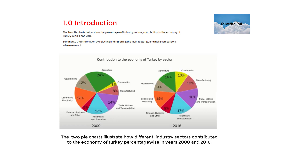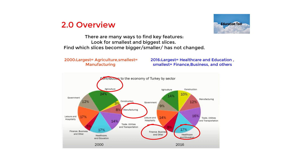You have already summarized the information in a general overview. In the introduction, I have paraphrased the given statement by finding the synonym of the word 'show' and changed it to 'illustrate.' I changed the noun 'contribution' into a verb 'contribute' and added 'how' in the sentence. The paraphrased introduction reads: 'The two pie charts illustrate how different industry sectors contributed to the economy of Turkey percentage-wise in the years 2000 and 2016.'